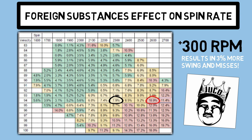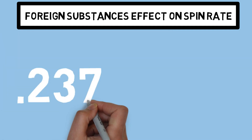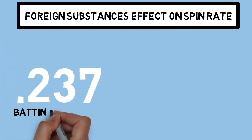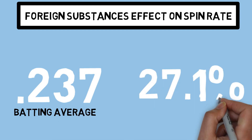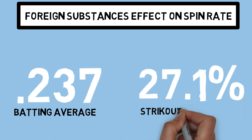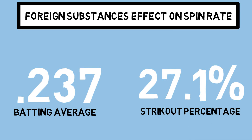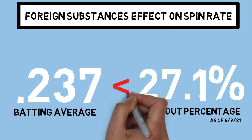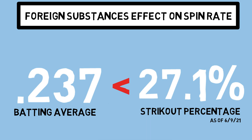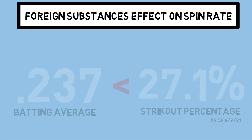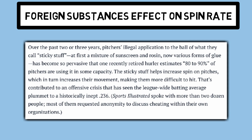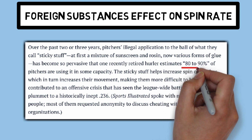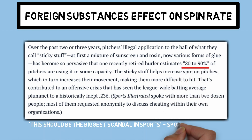So why do we care so much about this now? This year we have seen one of the lowest batting averages in MLB history, sitting at .237 at the time of making this video. The strikeout percentage in comparison is almost 3% higher at 27%. This isn't all attributed to the sticky stuff, but the pitcher's stuff is nastier than ever, and the use of foreign substances aids in making hitting even harder. If you pair that with a retired pitcher noting that 80-90% of MLB pitchers use some variation of stick'em, now you see why there's a problem.